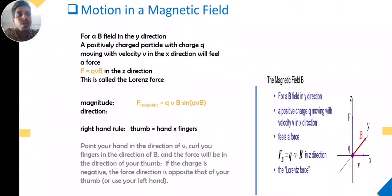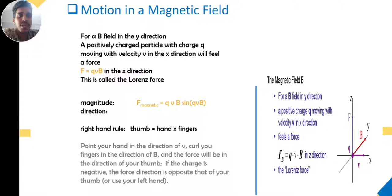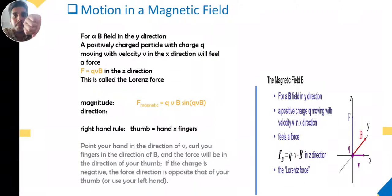Regarding motion in a magnetic field: if a field is applied perpendicular to the electric field, the electric field is perpendicular to the magnetic field, and the force is perpendicular to both. We have the Lorentz formula: F equals q v B sin theta, or F equals q times (v cross B). Using the right-hand rule, point your hand in the direction of v, curl your fingers in the direction of B, and the force will be in the direction of your thumb. If the charge is negative, the force direction is opposite to your thumb.